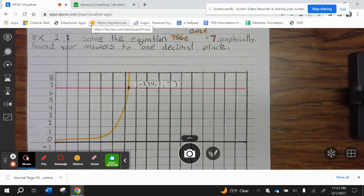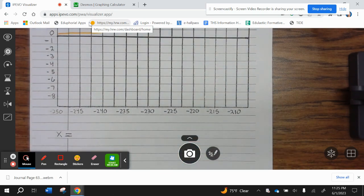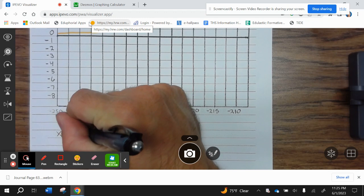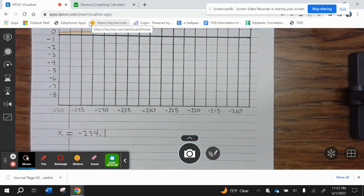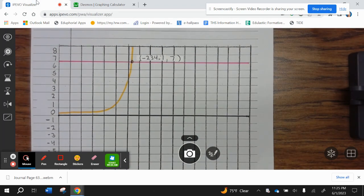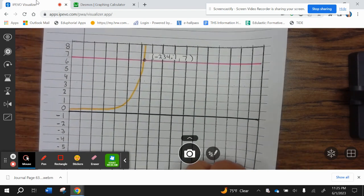So your solution is x equals negative 234.1. Go ahead and finish up your graph. And let's take a look at the last example.